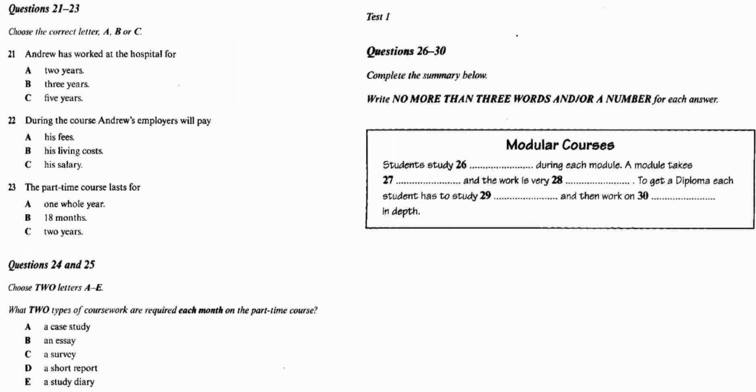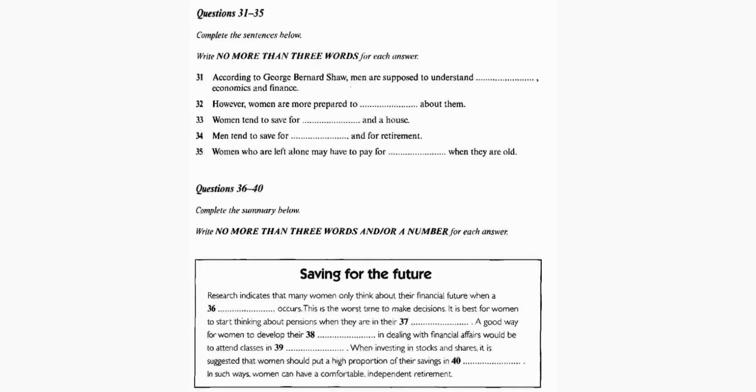That is the end of Section 3. You now have half a minute to check your answers. Now turn to Section 4. Section 4. You will hear part of a lecture given by an economist about North American women's attitude to money and saving. First, you have some time to look at questions 31 to 40.